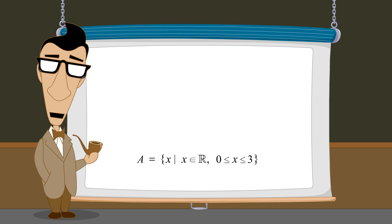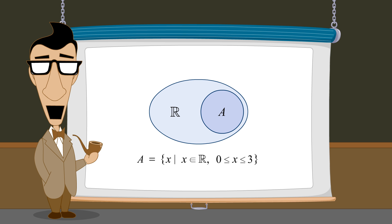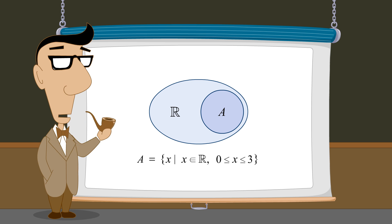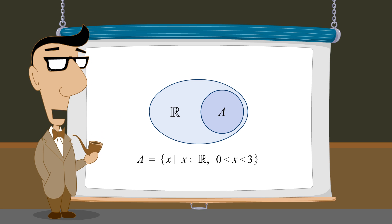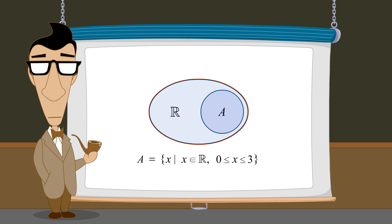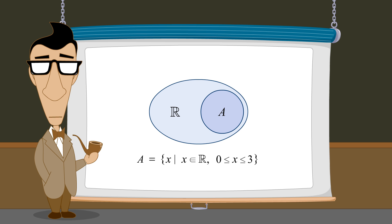We also saw how Venn diagrams can be used to illustrate relations between sets. This Venn diagram shows that set A is a subset of the set of real numbers. However, it does not show anything about the elements of A having values greater than or equal to zero and less than or equal to three.